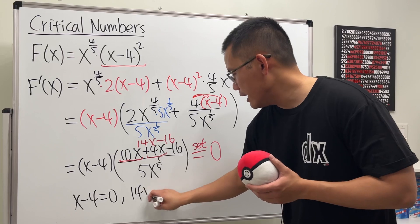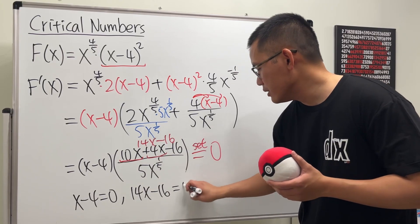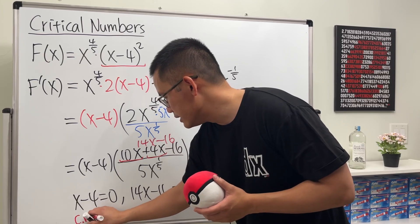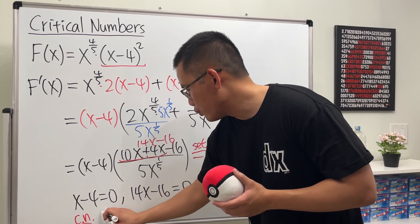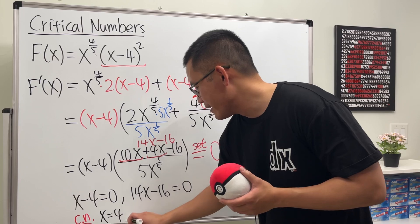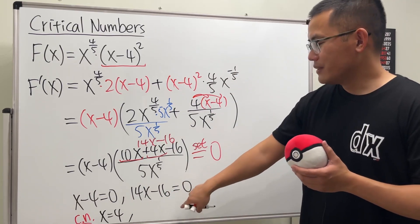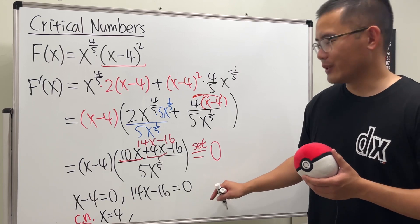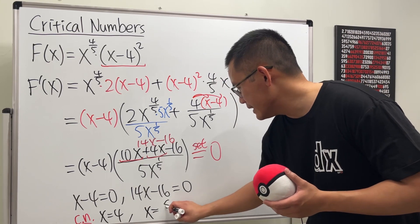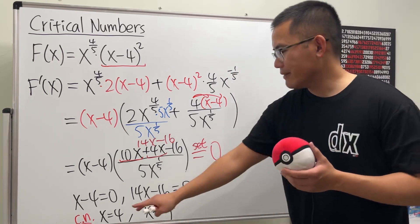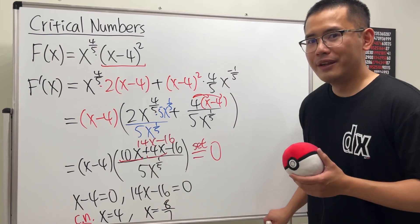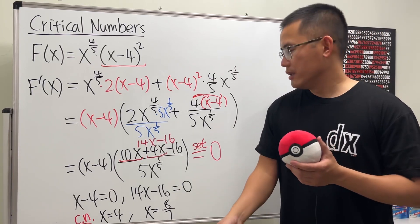Two cases: we want (x - 4) to be zero, and the other case is 14x - 16 to be zero. Solve this whichever way you like. For the first one, x equals 4. And then solve this whichever way you like: 16 divided by 14, reduce it by 2, so we get x equals 8/7. So we have these two critical numbers.